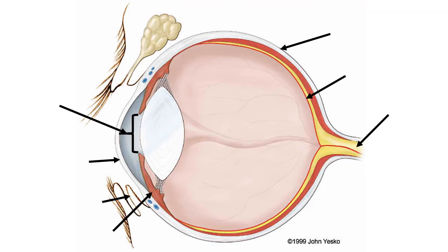Let's see if your answers are correct. Number one is the pupil — this structure dilates or constricts depending on the amount of light the eye is exposed to. Number two is the cornea, which is the most anterior layer of the eyeball.